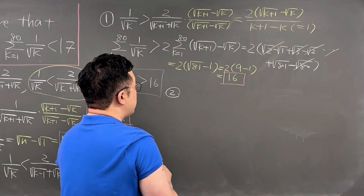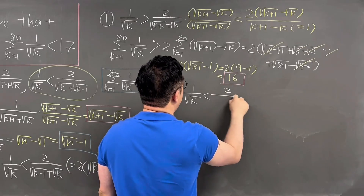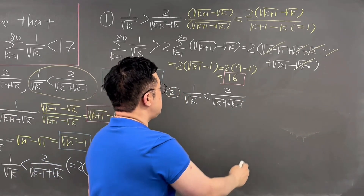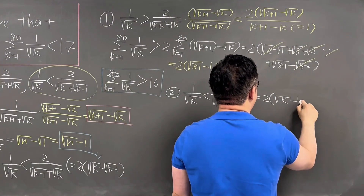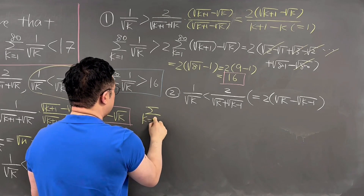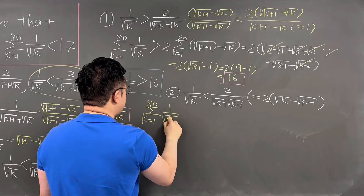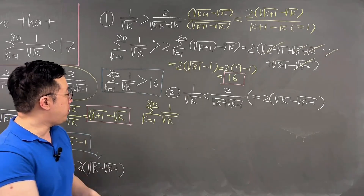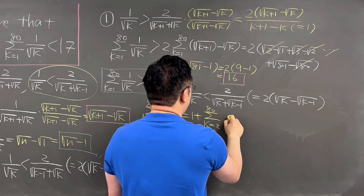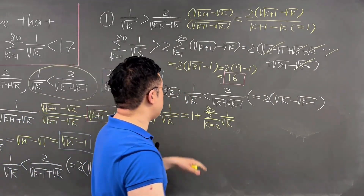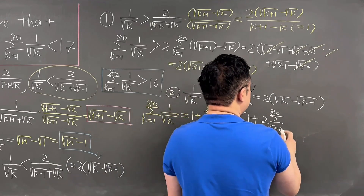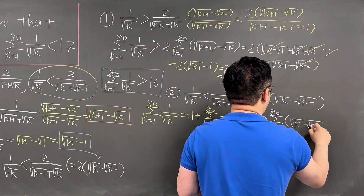For the second part, we already know 1 over square root of k is less than 2 over (square root of k plus square root of (k−1)), and the right-hand side equals 2 times (square root of k minus square root of (k−1)). Using this, I'll break the summation from k=1 to 80 of 1 over square root of k. Since plugging in k=1 gives the first term equal to 1, we break it into 1 plus the summation from k=2 to 80 of 1 over square root of k. This is less than 1 plus 2 times the summation from k=2 to 80 of (square root of k minus square root of (k−1)).